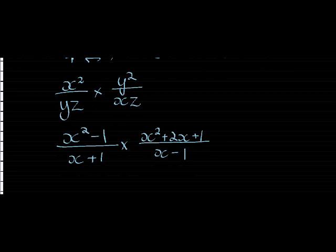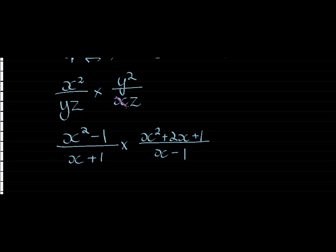I want to multiply these two fractions: x squared over yz times y squared over xz. I can see that x divides into itself once and into x squared — we subtract the exponents, so there's a 1 — and cancels with one of the two x's. Here's a y in the denominator that can cancel with one of the y's in the numerator, leaving one y in the numerator. Now z and z — both are in the denominator, so they can't cancel. Multiplying numerators gives xy, and multiplying denominators gives z squared.